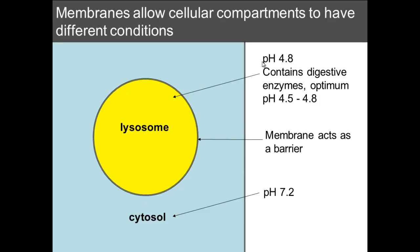The major function of a membrane is it allows a cell to be divided into different parts so you can have varied conditions in those different parts. A good example is a lysosome, an organelle that contains digestive enzymes. You would not want those digestive enzymes freely swimming around the rest of the cell as the rest of the cell would get digested. So membranes act as a barrier and therefore stop the digestive enzymes getting out.